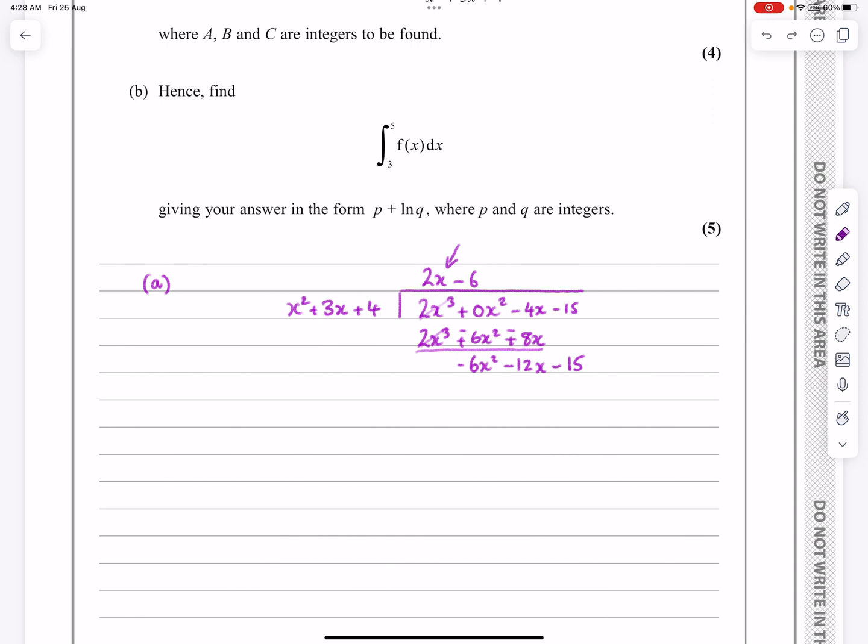What you should see here with this function is that the powers are decreasing each time. Otherwise, you've done something wrong. That should just happen automatically. So it goes in minus 6 times. So now let's do minus 6 multiplied by all of that. That's going to give me minus 6x squared, minus 18x, and minus 24.